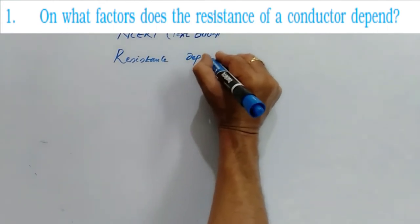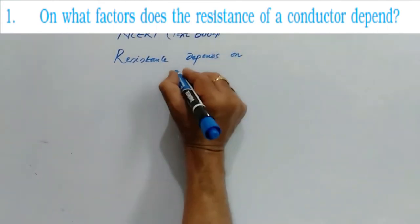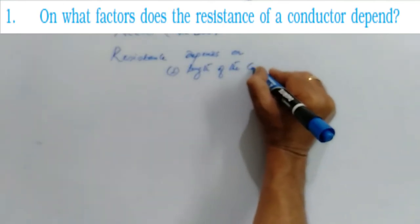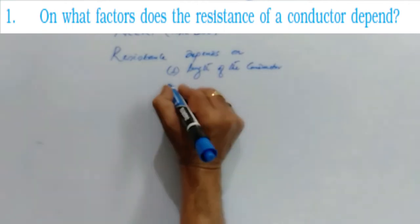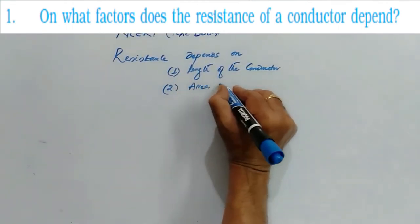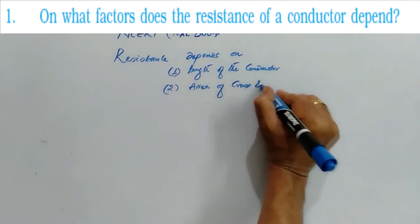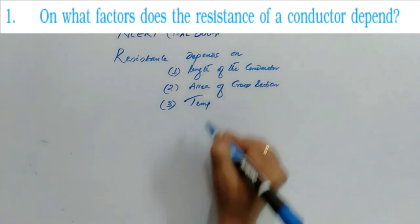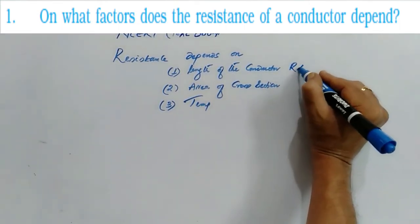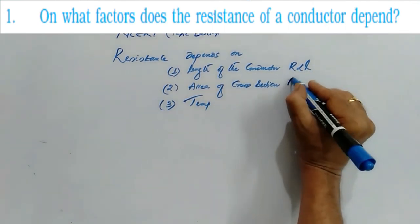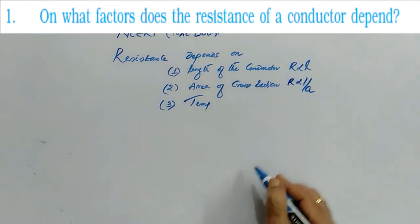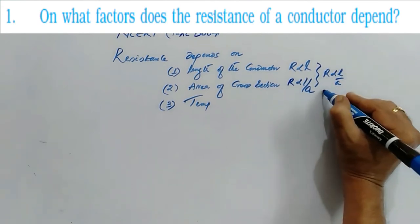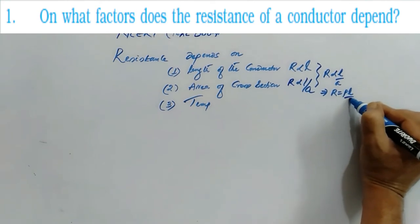The next question is on what factors does the resistance of a conductor depend. So resistance depends on length of the conductor, area of cross section of the conductor, and of course temperature. If length is increased the resistance is increased. If the area is increased the resistance is decreased. By combining these two we have written R is directly proportional to L by A, R is equal to Rho L by A.